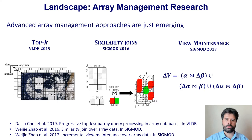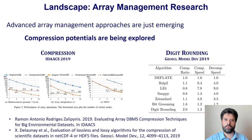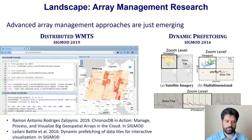Only recently, top-k queries, similarity array joins with shape arrays, and array view maintenance were first introduced. These novel operations find their applications in many domains, including earth science, astronomy, and HPC simulation. Compression potentials are also being explored, with researchers proposing novel and efficient compression techniques. Array DBMSs are beginning to support interactive visualization, which is crucial for data understanding and is provided natively to avoid costly data movements to external visualization systems.